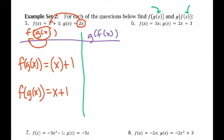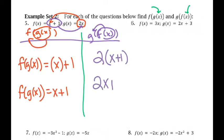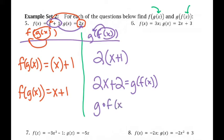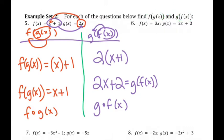Now I'm going to do g of f of x. That means I'm going to take my f of x and put it into g. It's going to be 2 times — and you want to make sure you use parentheses when you're doing this. If you don't, you're very likely going to get either signs messed up or not multiply the right thing. One thing to notice for sure is that f of g of x is not the same as g of f of x. So you can't go backwards and forwards and have it mean the same thing.